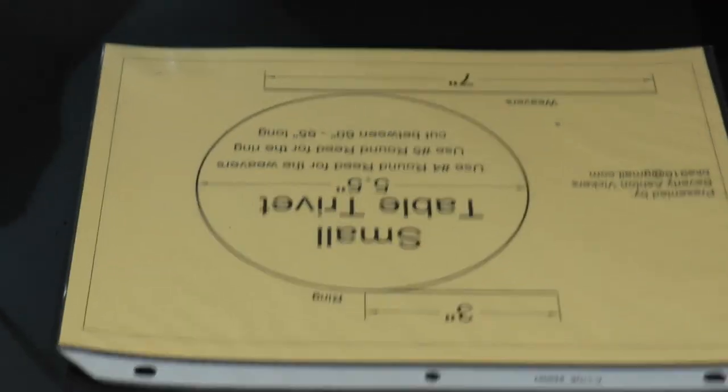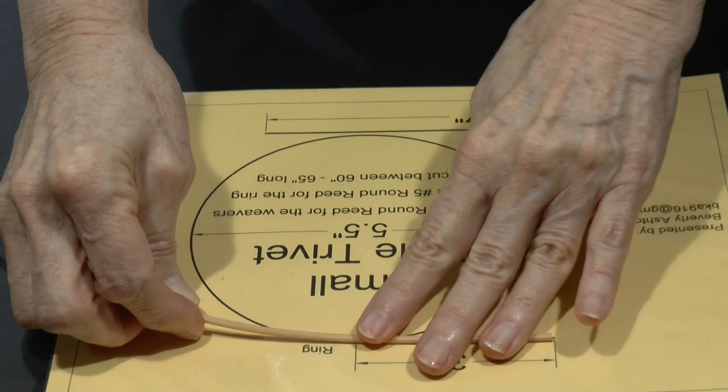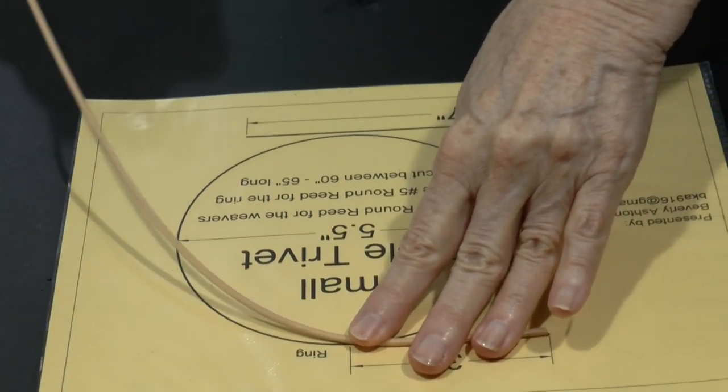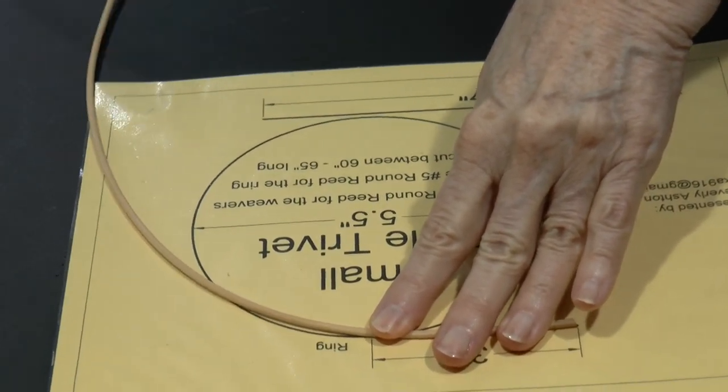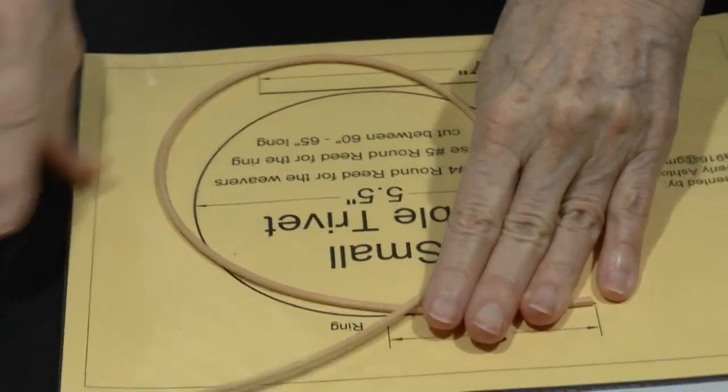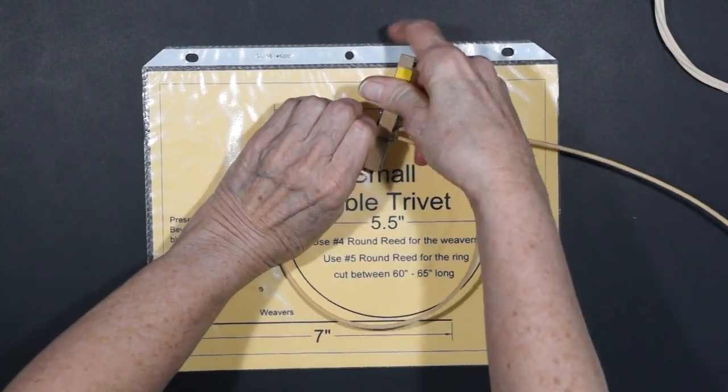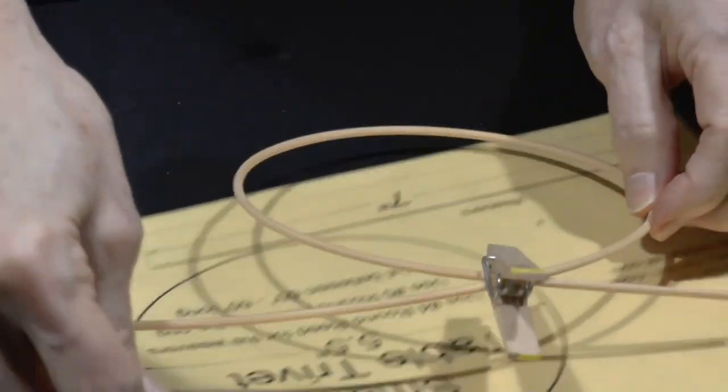Using the graphic as a guide, we place the reed on it to create about a 3 inch tail. Then, we fashion the reed into a circle that is 5 1⁄2 inches across and secure it with a clip or a clothespin on the top of the 3 inch tail. At this point, we are finished with the graphic.